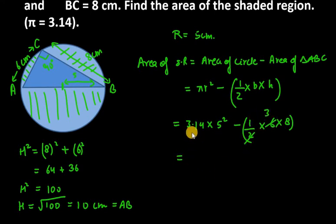So, now you have to multiply these 3 parts, that is 3.14 into 5 square. 5 square is 25 and 25 into 3.14 is 78.50. Then subtract with 3 into 8, that is 24.